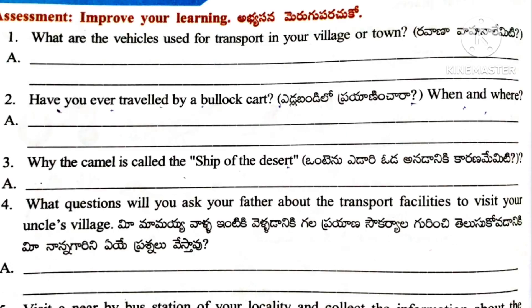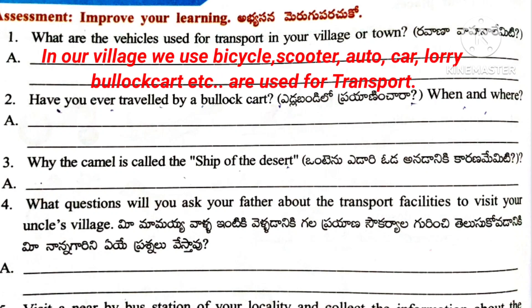Worksheet 6. Next: Assessment — Improve your learning. Question number 1: What are the vehicles used for transport in your village or town? Answer: In our village we use bicycle, scooter, auto, car, lorry, and bull cart for transport.